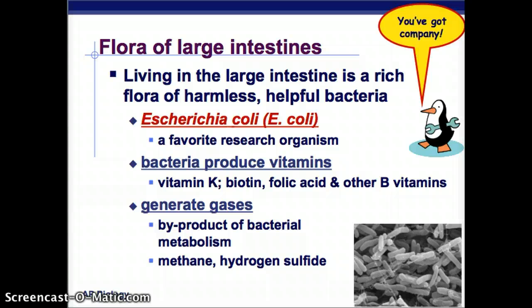In the large intestine, there's a bunch of harmless but helpful bacteria. One is E. coli, which is a very interesting organism. The most helpful ones are bacteria that produce vitamins — they give you vitamin K, folic acid, B vitamins, and things like that. They also generate gases as a byproduct of bacterial metabolism, such as methane and hydrogen sulfide.